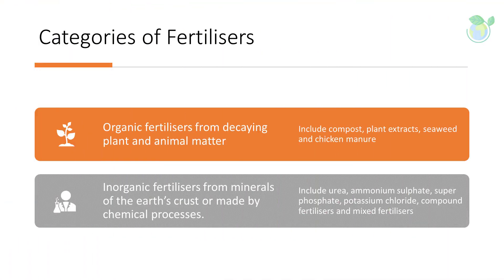Generally, fertilizers are sorted into two groups. Organic fertilizers from decaying plant and animal matter include compost, plant extracts, seaweed, and chicken manure. Whereas inorganic fertilizers from minerals of the earth's crust or made by chemical processes usually include urea, ammonium sulfate, superphosphate, potassium chloride, compound fertilizers, and mixed fertilizers.